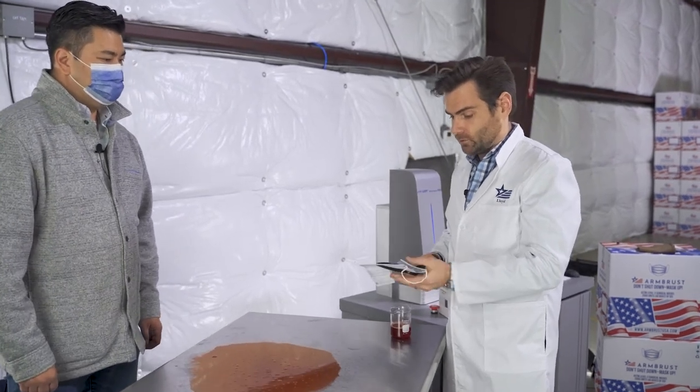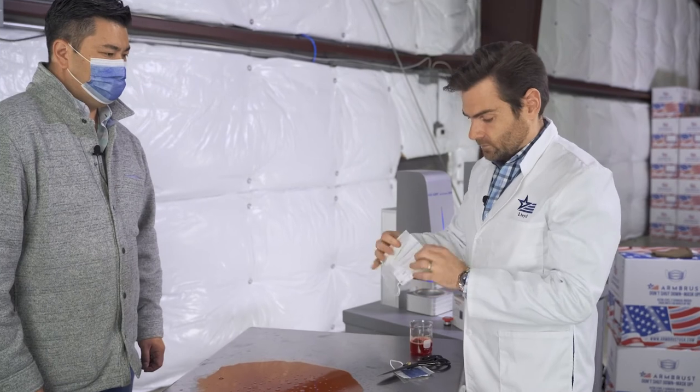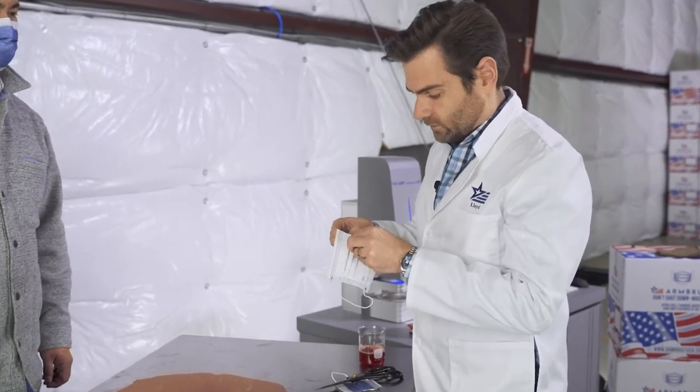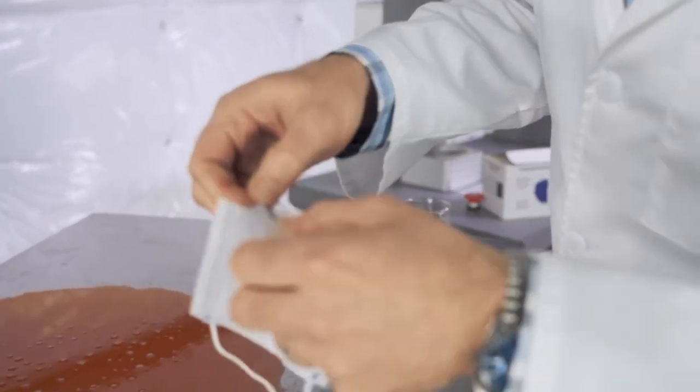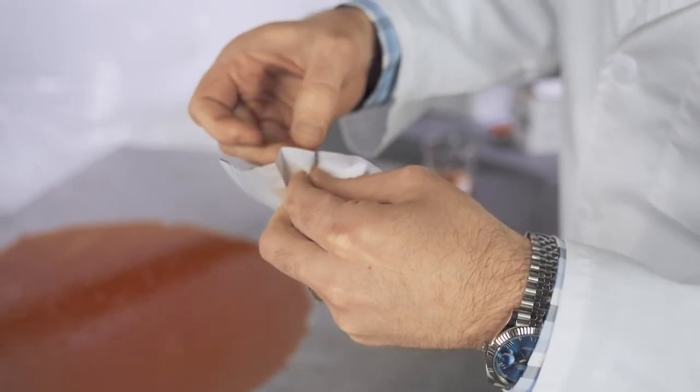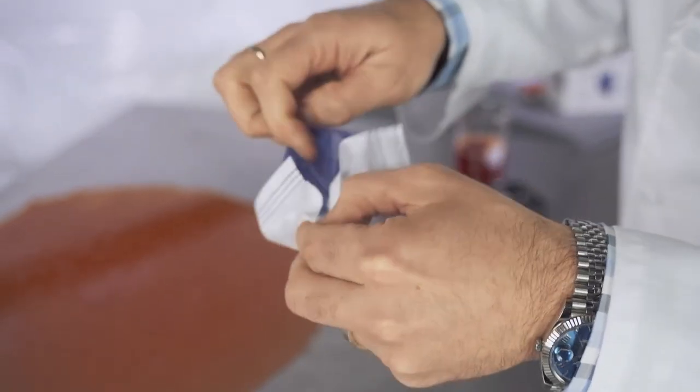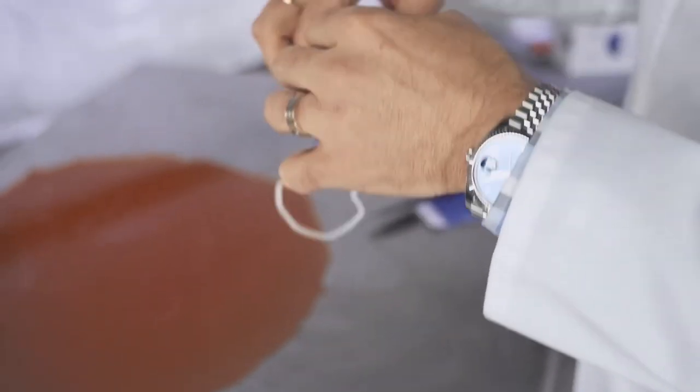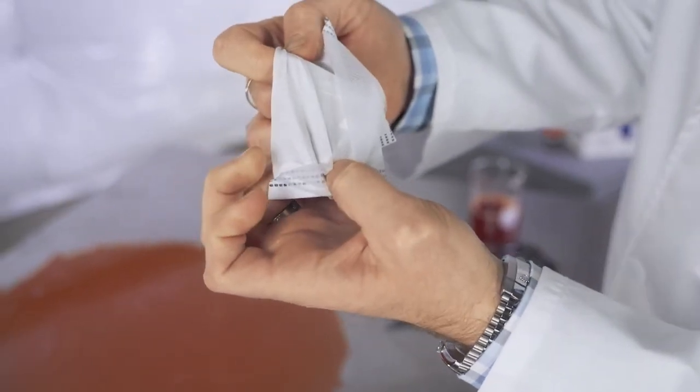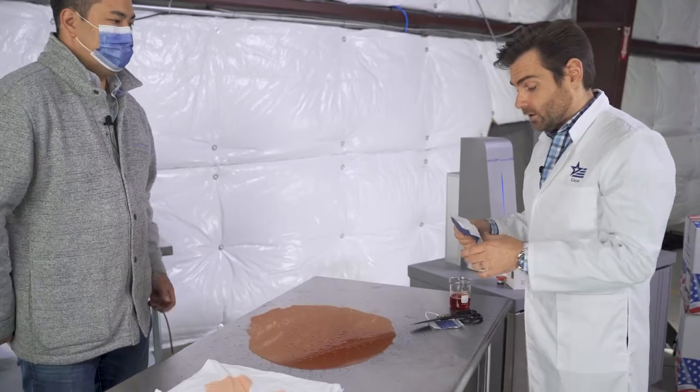So I'm going to cut one of these open so that you can see, and the center layer is a much thicker piece, what we call melt blown. And the way melt blown works is it uses static electricity to capture things like COVID.